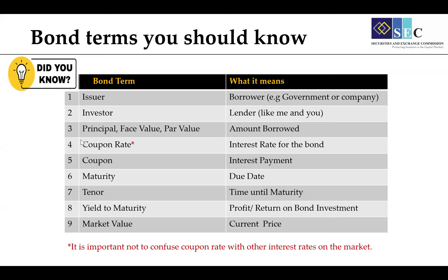The third term commonly used in bonds is principal, face value, or par value. All three words mean the same thing and are used interchangeably. It is simply the amount that is borrowed — the total amount of money that the issuer promises to pay you back at the time when a bond matures. Another commonly used term is the coupon rate, which is the interest rate that the issuer promises to pay you on the bond. It's usually calculated on the principal amount — think of it as an annual fee for lending the money.